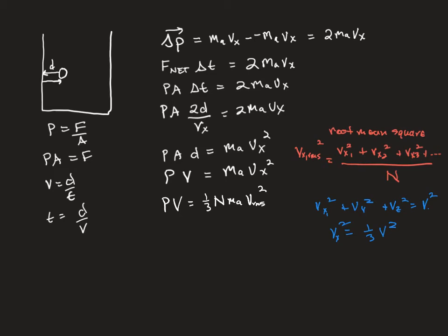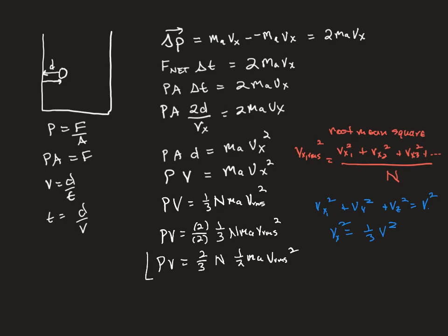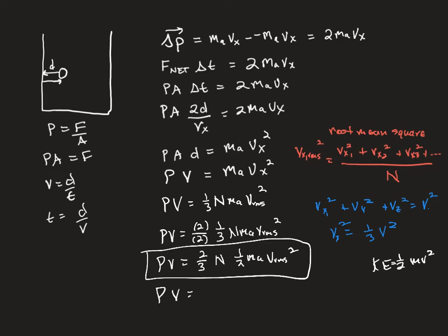Now we need to get kinetic energy in there, and I'm going to do this with a little math trick: multiply by 2 over 2, which doesn't change anything since 2/2 equals 1. I'm going to separate that out — putting one third out front, and bringing the one half together with m·v_rms². This should look familiar, because kinetic energy equals one half mv². So we can rewrite this so that pressure is proportional to the kinetic energy. Keep in mind, because this uses mass of one atom, this is the kinetic energy of one single atom inside the gas.